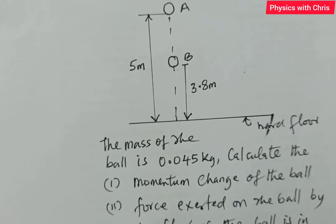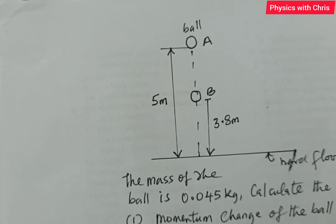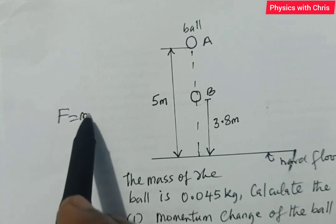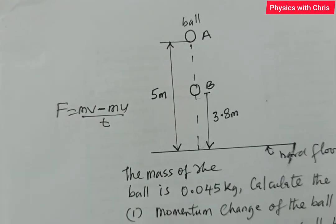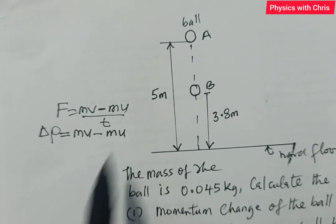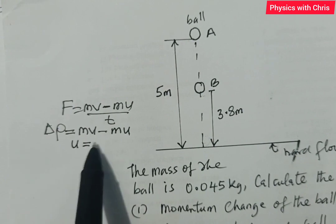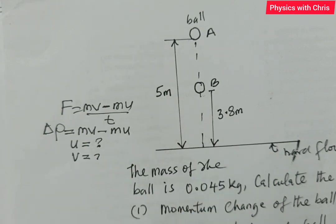I'm going to apply Newton's second law of motion to solve this problem: F equals final momentum minus initial momentum over time T. First, we need to find the momentum change of the ball, which is final momentum minus initial momentum. That means I need to find the initial and final velocities of this ball. Some students make the mistake of using five and 3.8 as the velocities — the initial and final — but that will lead to a very wrong answer.